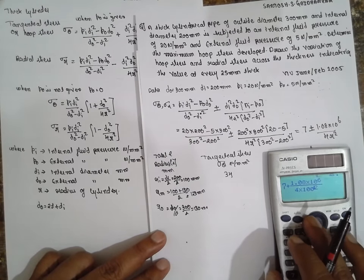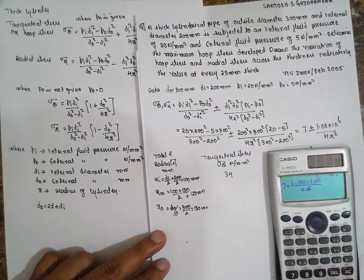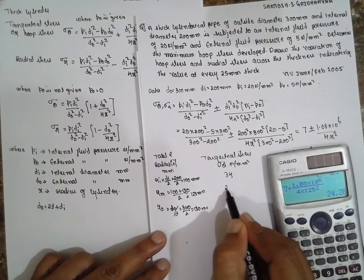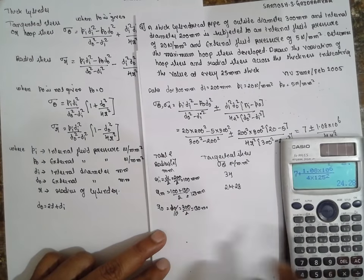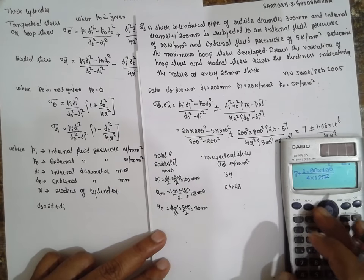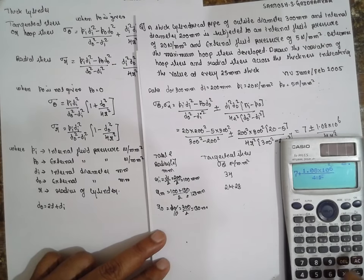Next I will go for 125: 24.28. Next I will go for R₀ value: 150. 19.